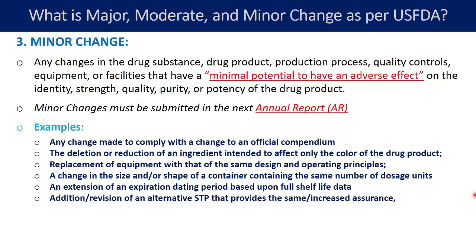Addition or revision of an alternative standard testing procedure that provides the same or increased assurance is a minor change. For example, if you want to change your standard testing procedure to one that is more accurate and precise, or if you want to add an alternative testing procedure — such as adding an alternative to an existing HPLC assay method that is equivalent or better — that is a minor change. Deletion of any alternative analytical procedure from your standard testing procedure is also classified as a minor change.